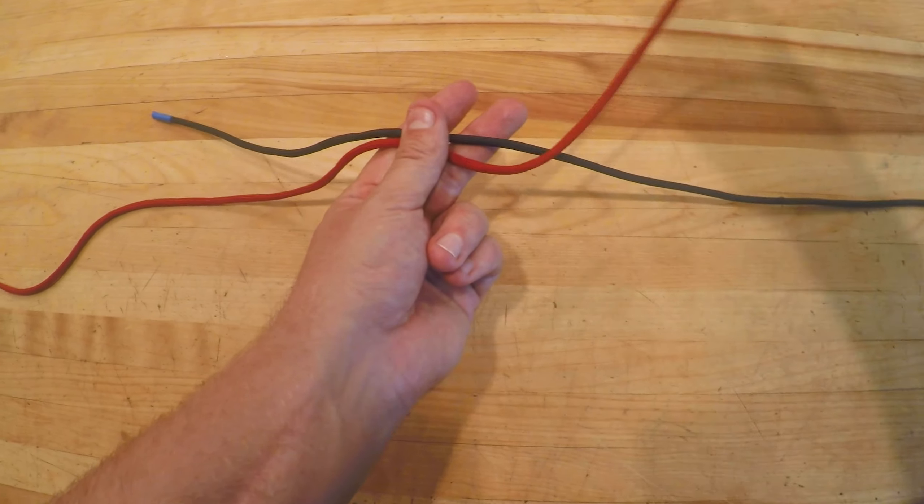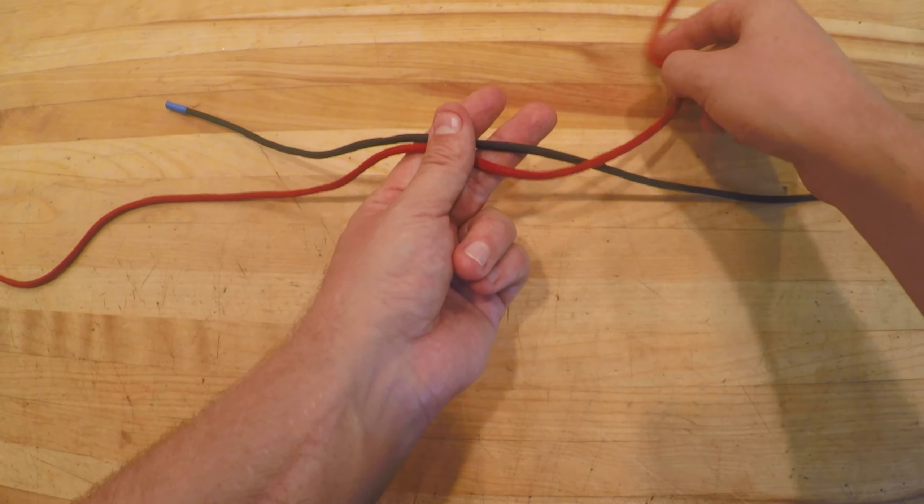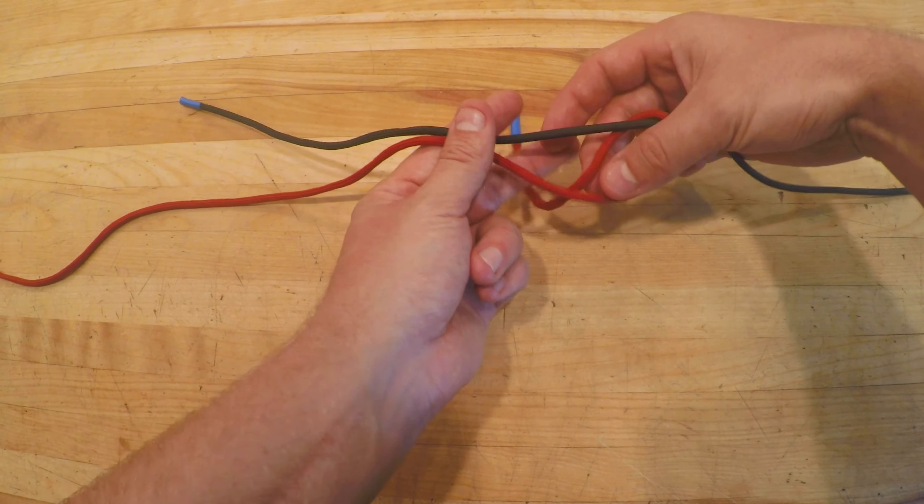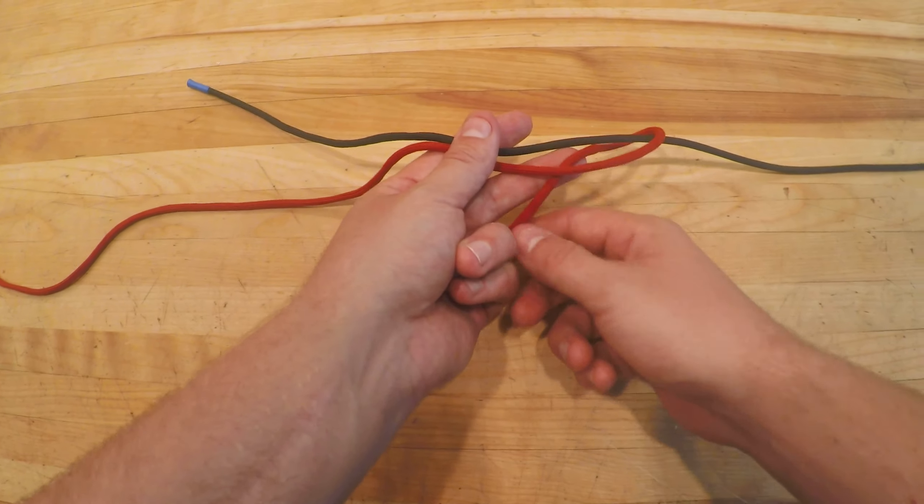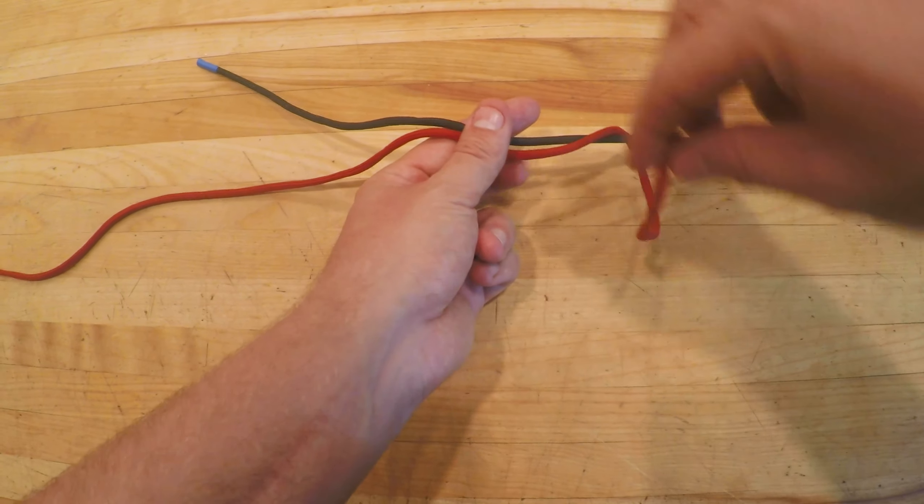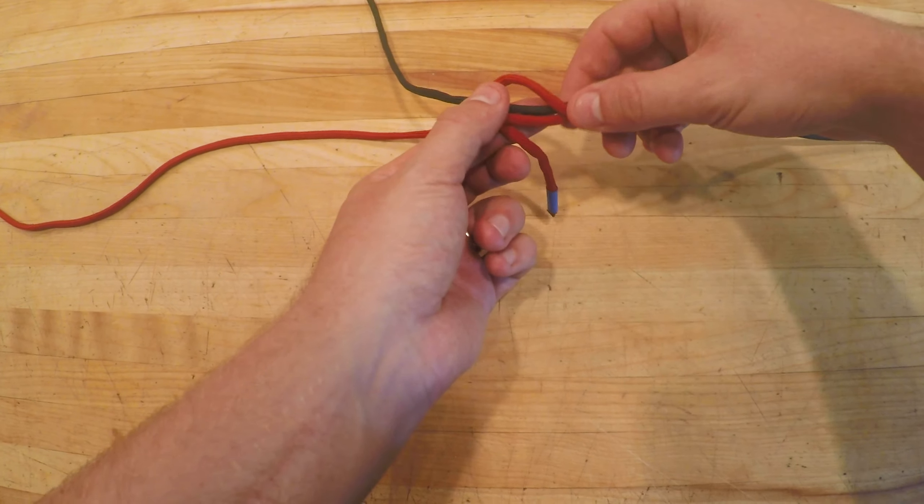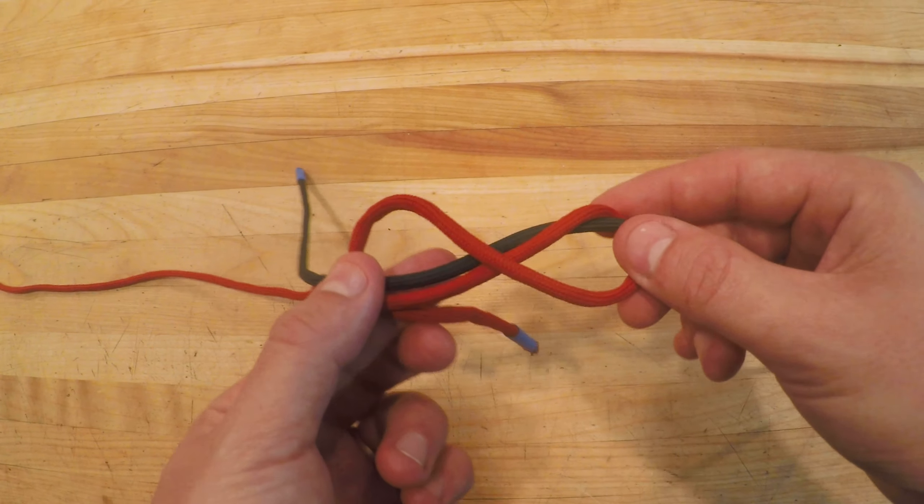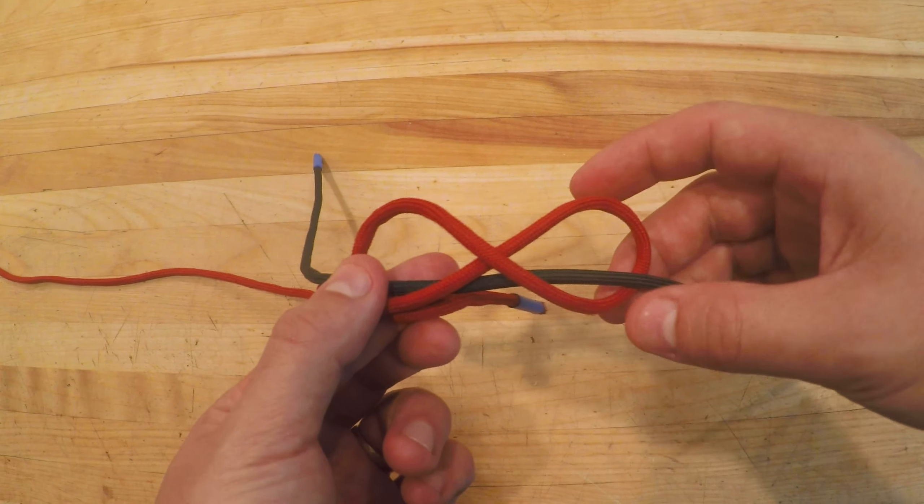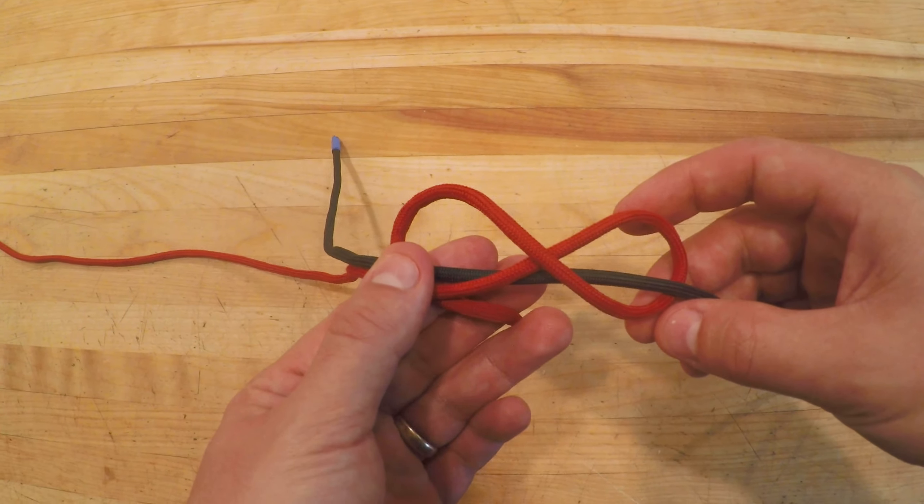Next I'm going to take my red, I'm going to pass it over my green, bring it underneath, and then pass it over on top again and bring it back underneath like so. You'll notice what I've done is I've created essentially a figure eight around my green rope with an X in the center.